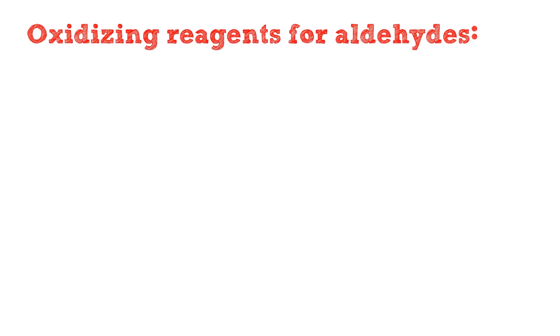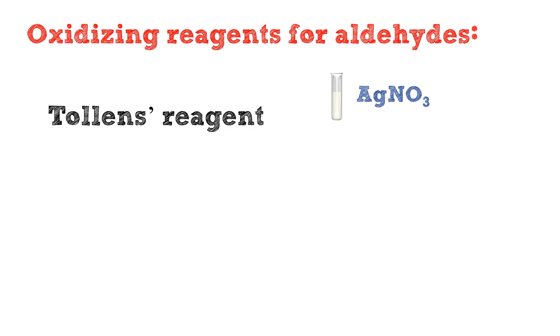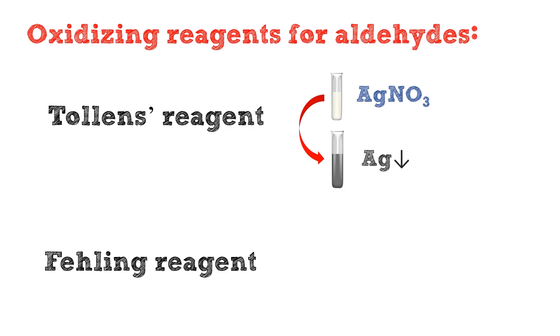The two oxidizing agents — Tollens' reagent and Fehling's solution — can be used to distinguish between aldehydes and ketones. First, let's see how we can use Tollens' reagent to distinguish between aldehydes and ketones.